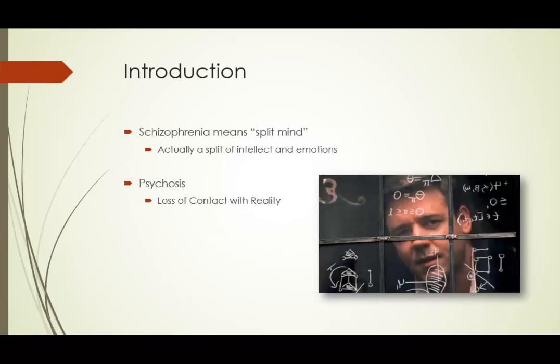Psychosis is a significant loss of contact with reality. Here we see a portrayal of John Nash from the movie A Beautiful Mind — a very famous schizophrenic who won the Nobel Prize. John Nash, a famous mathematician.